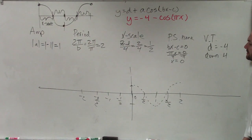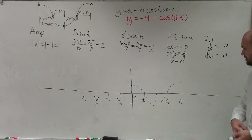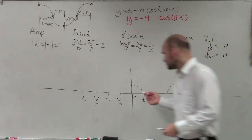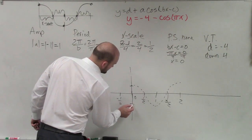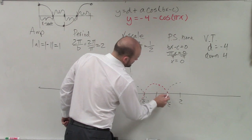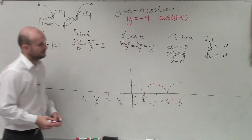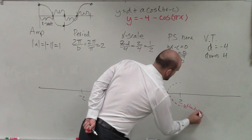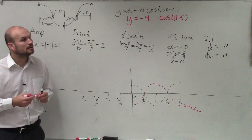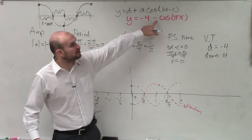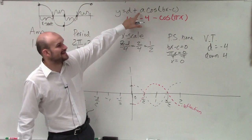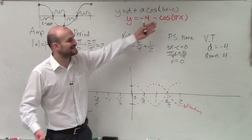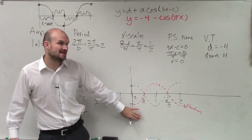Now we need to apply the reflection. If I apply the reflection, that means everything gets inverted over the x-axis, so now my graph is going to look like this. That's the reflection — because it's being multiplied by a negative. Remember, like a quadratic: when a is negative, you flip it over. It's the exact same thing — your a is negative, so you reflect over the x-axis.